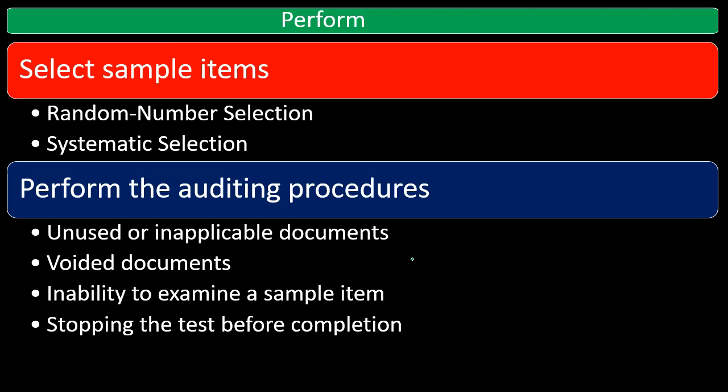Some terms we will use as we consider those auditing procedures include: unused or inapplicable documents, voided documents, inability to examine a sample item, and stopping the test before completion. Applying our example, we're looking at verification in the controls of purchasing. We're going to take a purchasing document and check it to see if it has initials on it, indicating it went through the verification process. We'll select items from the entire population of purchase documents and verify each one.